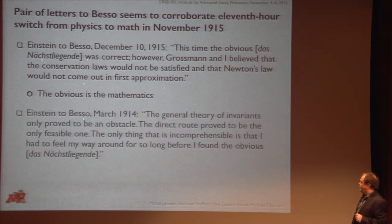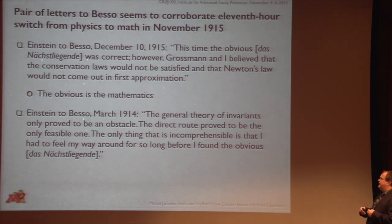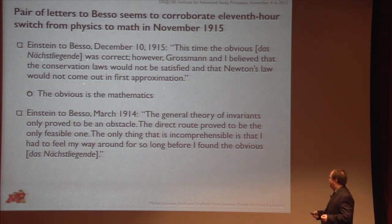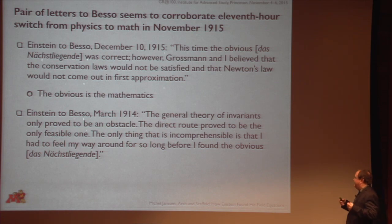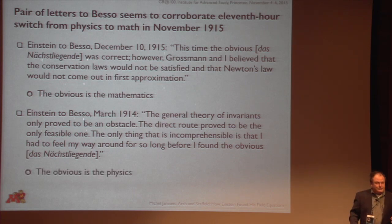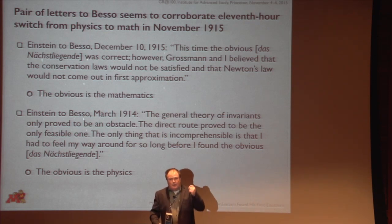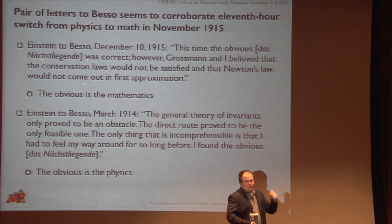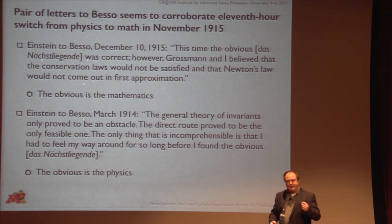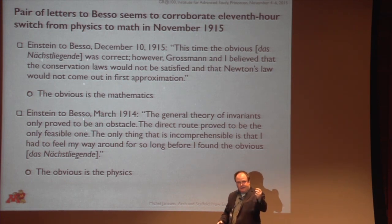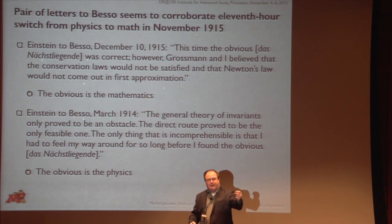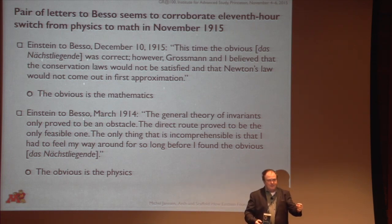Now look what he wrote just a year earlier to Besso in March of 1914. He says: 'The general theory of invariance only proved to be an obstacle. The direct route proved to be the only feasible one. The only thing that is incomprehensible is that I had to feel my way around for so long before I found the obvious' — the exact same word, das Nächstliegende, and of course this time 'the obvious' is the physics. So again, it seems like I've been mounting evidence for this picture that it is this switch at the 11th hour from physics to math that brought the breakthrough, and that Einstein was correct in his later years to put his faith in mathematics. But you're all waiting for the 'but' — and it's coming now.